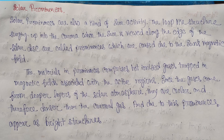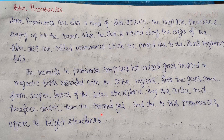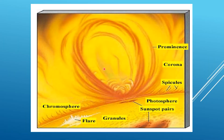Let's discuss what is a solar prominence. Just like other solar activities such as sunspots and solar wind, solar prominences are also a kind of solar activity. The loop-like structures surging up into the corona when the sun is viewed along the edge of the solar disk are called prominences. These are caused by the sun's strong magnetic field, and the materials in the prominences comprise hot ionized gas trapped in magnetic fields associated with active regions. Since the gases came from the deeper layers of the solar atmosphere, they are cooler and therefore denser than the outward coronal gas, and due to this, prominences appear as bright structures. Here you can see a photograph of solar prominences showing these loop-like structures.